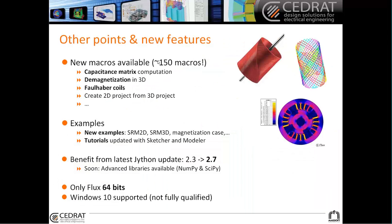We have a lot of macros, around 150 macros, and we added some more macros this year. Some capacitance matrix computation, which can be useful instead of running a lot of electrostatic studies. Some demagnetization in 3D. Doing some flat over-coils, which are already done thanks to a macro. You can create a 2D project from a 3D project by doing a cut — if you choose a cut plane, you can create directly a 2D project. And we have some more macros coming.